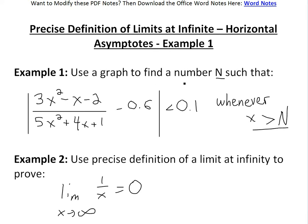It says use a graph to find a number N such that the absolute value of this function minus 0.6 is less than 0.1 whenever x is greater than N.